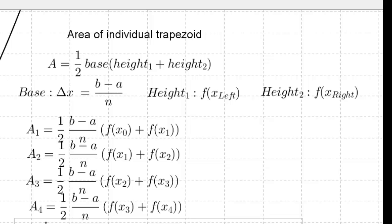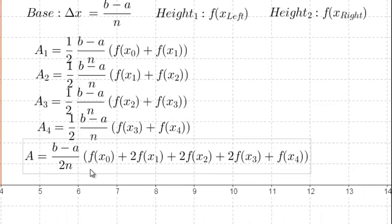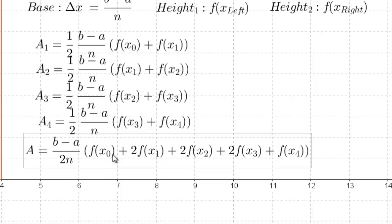An interesting thing happens if we try to add them all together. What winds up is that the first f(x), the very first one f(x₀), and the last one f(x₄), are only added once. But all the other ones, because they're in actually two trapezoids—they're the end of one and the beginning of the other—they wind up getting added twice. So in the case of our four trapezoid situation, we would have one f(x₀) and two each of f(x₁), f(x₂), and f(x₃).